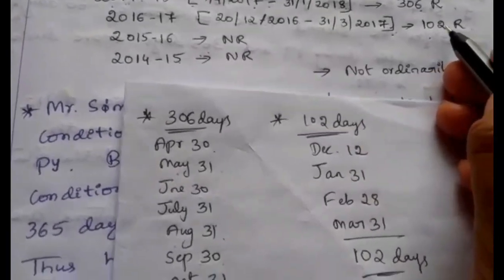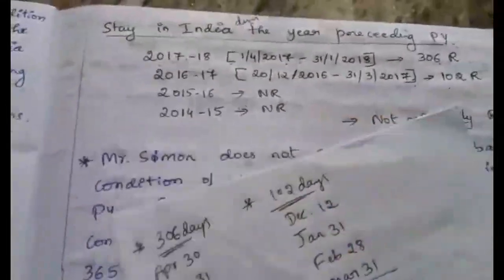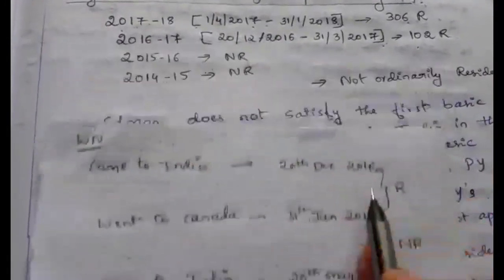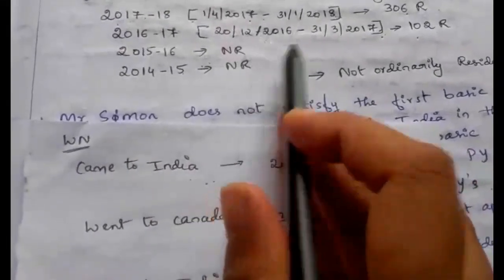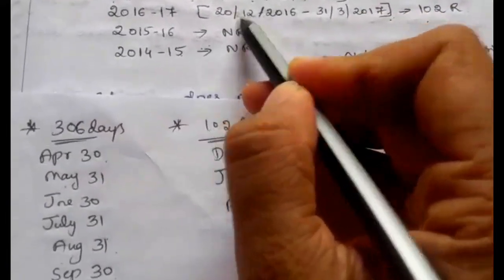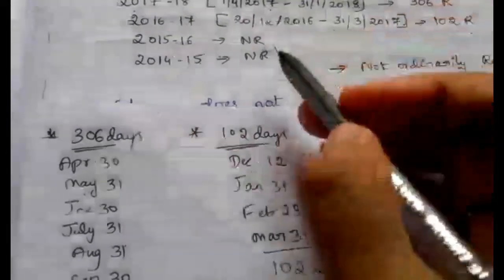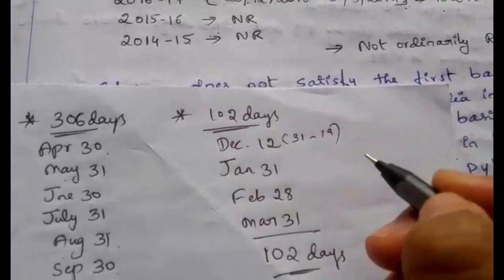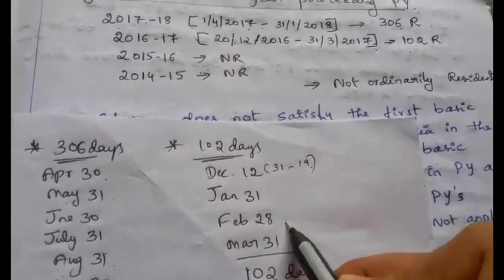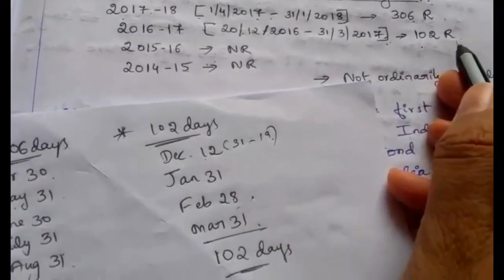For the year 2016-17: he came to India on 20th December 2016. The year starts from 1st April 2016, but he came on 20th December 2016. December: 31 total days minus 19 days excluded = 12 days. January: 31 days. February: 28 days (2017 is not a leap year). March: 31 days. Total: 102 days he was resident in 2016-17.